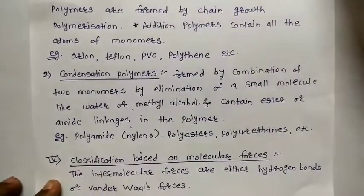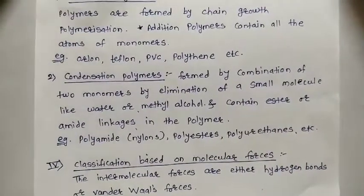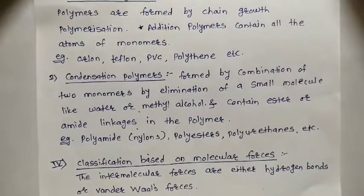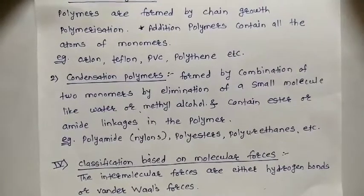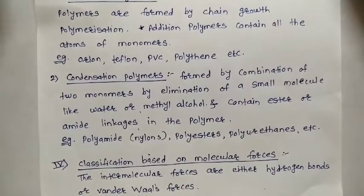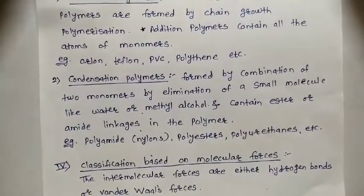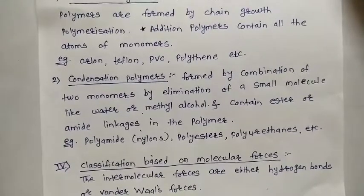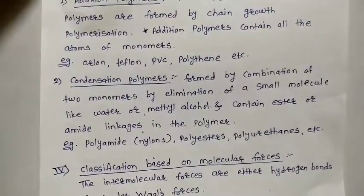The second type is condensation polymers, formed by the combination of two monomers with elimination of a small molecule like water or methyl alcohol. There should be condensation, and condensation involves elimination of small molecules such as water or methyl alcohol, forming the linkages present in condensation polymers.